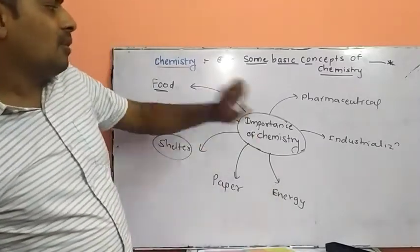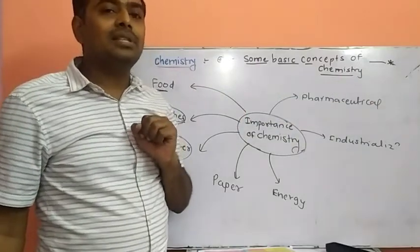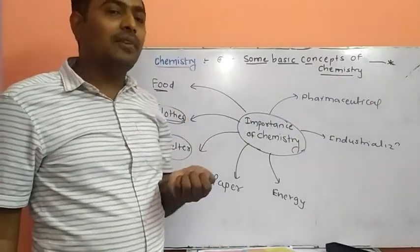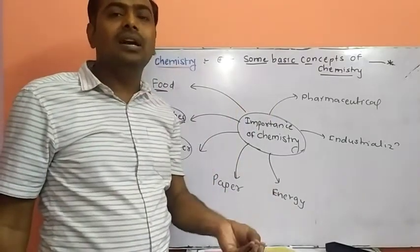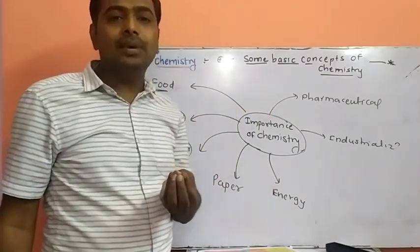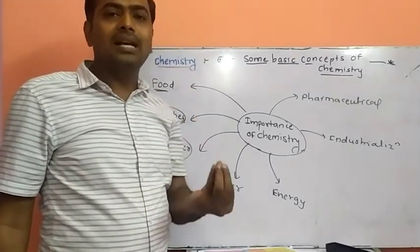That is studied from chemistry. Also, medicine, pharmaceutical chemistry is an important aspect of our life. Different types of industry: no industry in the world can stand without the help of chemistry. So, chemistry is an important branch or main branch of science.